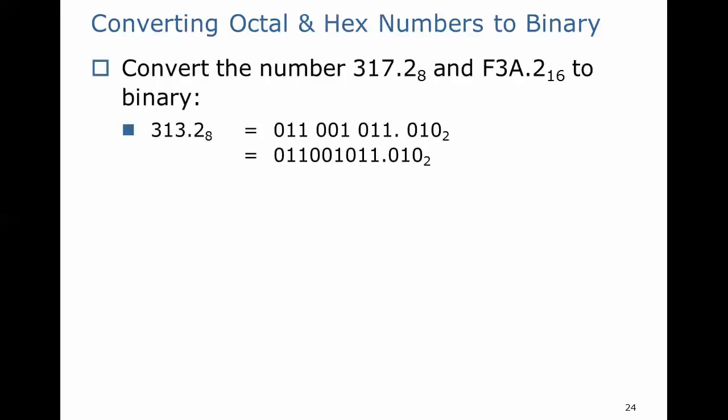Here's how we convert from octal or hex to binary. Let's convert 313.2 octal to binary. What we do is we take each individual octal digit and we convert it to its equivalent 3-bit value.